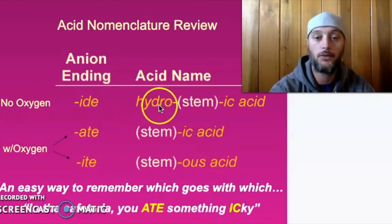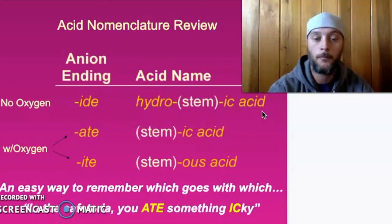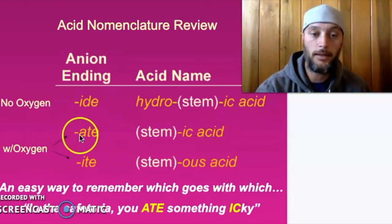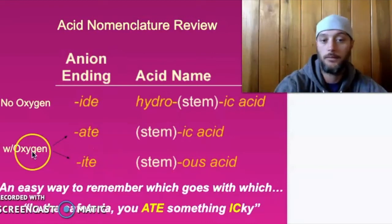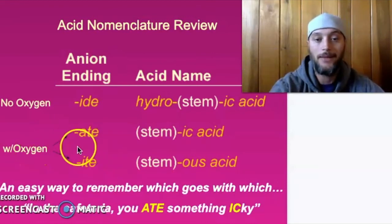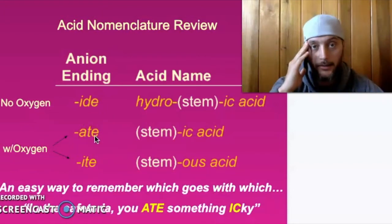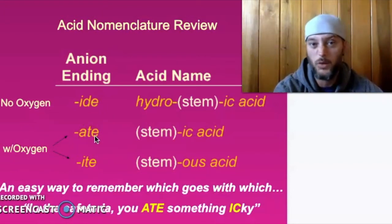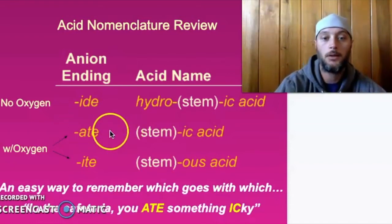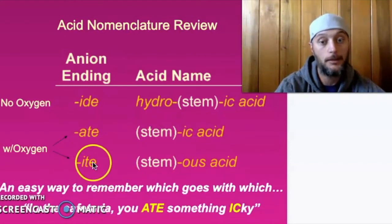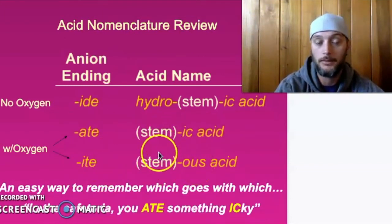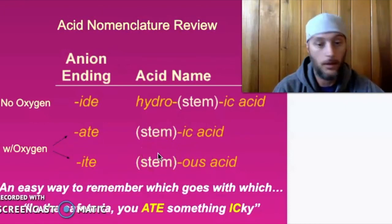Things that have oxygen in them will end in -ates and -ites — think sulfate, sulfite, nitrate, nitrite. If I have nitrate, I have nitric acid. If I have nitrite, I have nitrous acid. They have different properties — it matters which one you have. One is going to be stronger than the other.